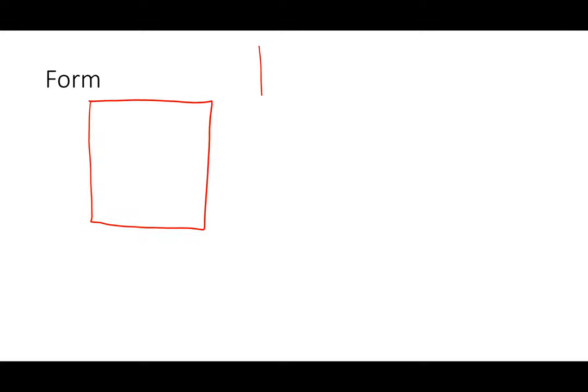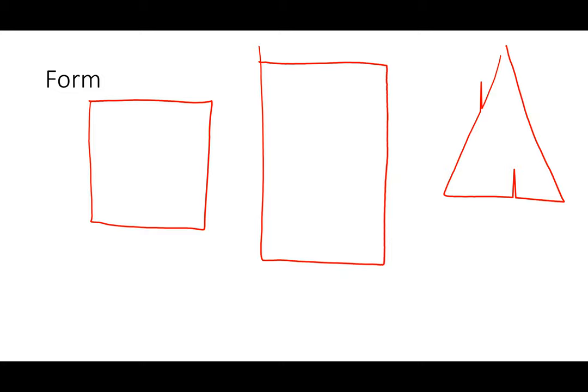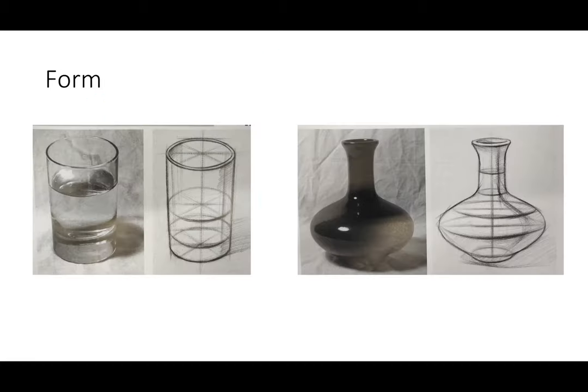Now I talk about form. Form is the next step after shape. If shape is 2D, form is 3D. By understanding form, we take 2D images and create 3D objects. Remember when I started with a square, rectangle, and triangle? By adding a few simple lines, we can make these shapes into 3D structures. By mastering form, artists draw on a flat surface to show real life. The easiest way to think of form in artwork is through structure sketches. Structure sketches teach artists to think about objects as their most basic form. By understanding form, artists can draw just about anything.